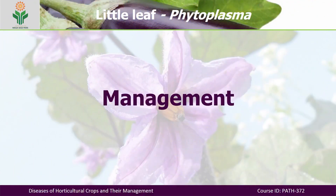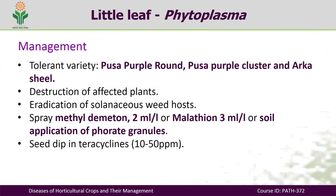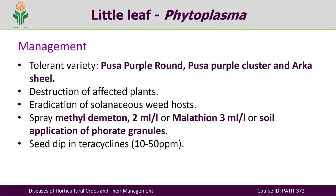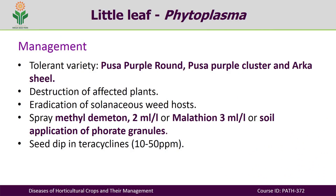Now we come to management. There are some tolerant varieties like Pusa Purple Round, Pusa Purple Cluster, and Arka Sheel, which have been reported as tolerant. As soon as we see affected plants, we should immediately destroy them. We should also eradicate solanaceous weed hosts. We can apply tetracycline as a seed dip at 10 to 50 ppm. For spraying, we can use methyl demeton at 2 ml per litre, or malathion at 3 ml per litre, or apply phorate granules for soil application.